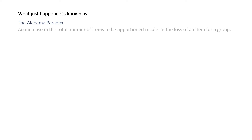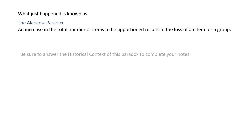What just happened is known as the Alabama Paradox. The Alabama Paradox states: an increase in the total number of items to be apportioned results in a loss of an item for a group. That is paradoxical. Be sure to answer the historical context of this paradox to complete your notes.